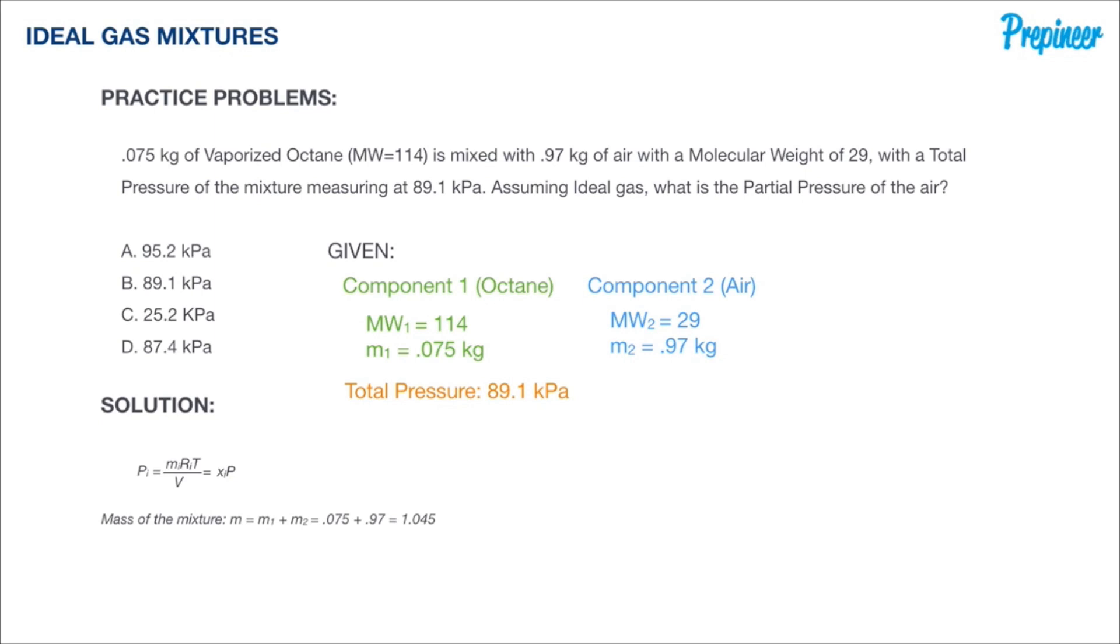Now the mass fraction formula y_i is the mass of the component divided by the mass of the mixture. Plugging in our information for air, we have 0.97, that's the mass, divided by 1.045, which is the total mass of the mixture, and we get a mass fraction of 0.928. And the mass fraction for octane is just 0.075 divided by 1.045, which is 0.072.